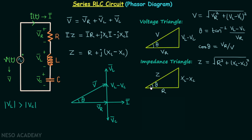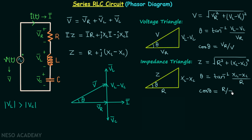The power factor angle θ equals tan inverse of (XL minus XC) divided by resistance R, and the power factor cos θ equals resistance divided by impedance. The last triangle is the power triangle.